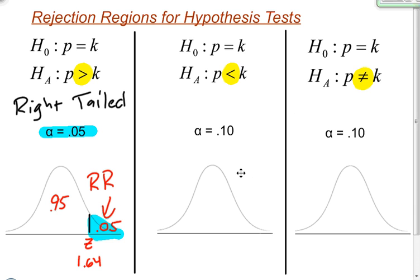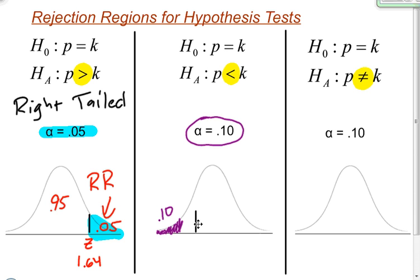Now moving a bit quicker — this symbol in the alternative tells me I'm doing a left-tailed test. I'll draw a line here to represent the cutoff point for my rejection region and shade the rejection region on the left side. My alpha here is equal to 0.1, so 0.10 is the area that creates my rejection region. The area under the curve in the shaded region is 0.1 — that's my rejection region.